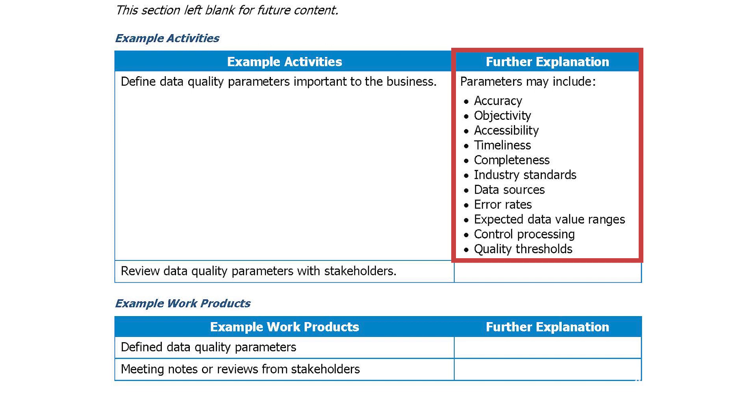These parameters of data quality will naturally inform when data cleansing is needed, the subject of practice DQ 1.2. These two practices establish the basic principles of data quality: establish the dimensions that are important to the business, then conduct activities such as data cleansing based on business priorities to ensure the data fulfills those requirements. At level one, the way these principles are fulfilled may be relatively basic.